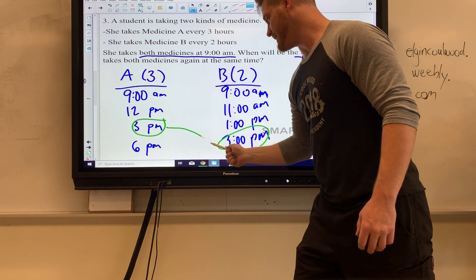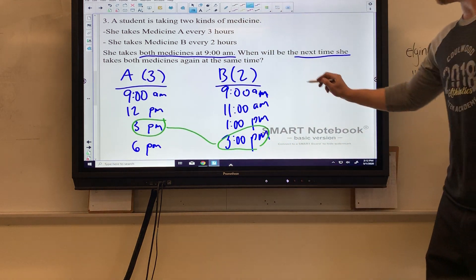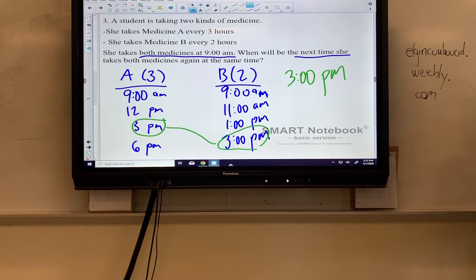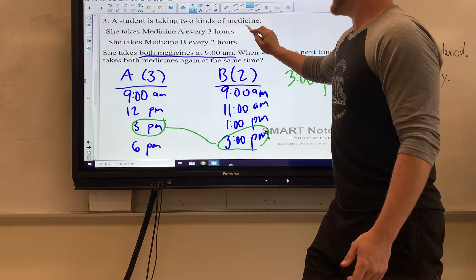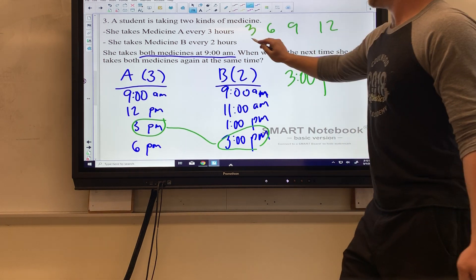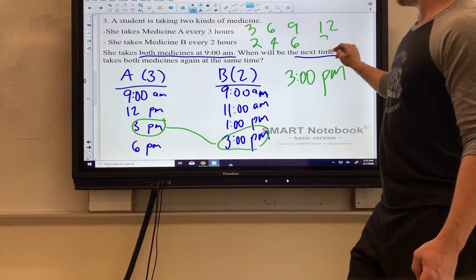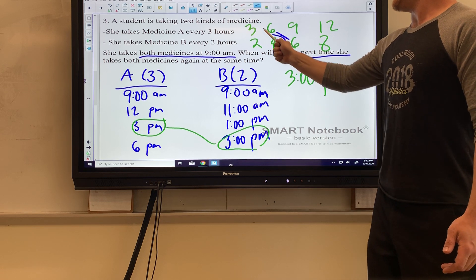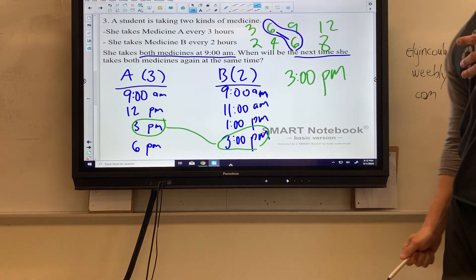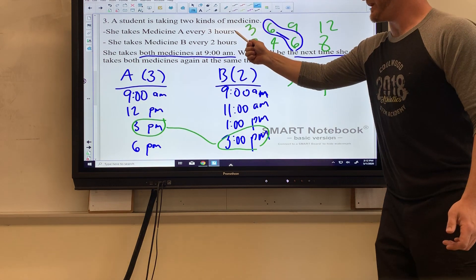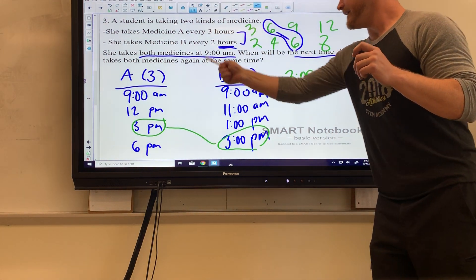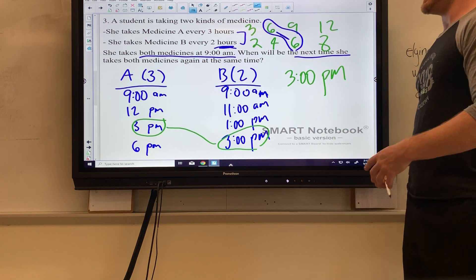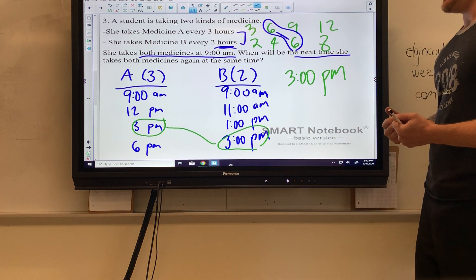That's the first time they share, so the answer is going to be three o'clock in the afternoon. Now a quicker way for those who know least common multiple: If we're counting by threes and twos—three, six, nine, twelve; two, four, six, eight—we notice the first number they share, the least common multiple, is actually six. Just know six o'clock is going to be an answer choice, but we're not counting by clocks here, we're counting by hours.